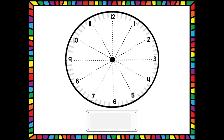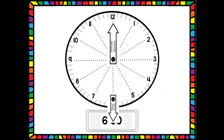Let's do another. What time does this clock want us to show? Six o'clock — very good! So where is our minute hand going to be? The minute hand should stay at the twelve for six o'clock. Where do I put my hour hand? Pointing directly down to the number six. So if my clock looks like this, then it is six o'clock.